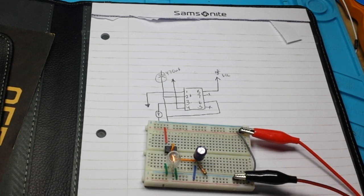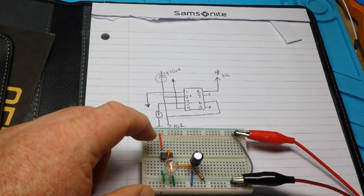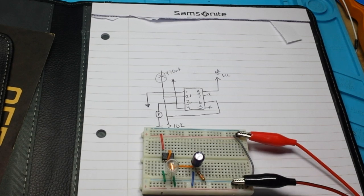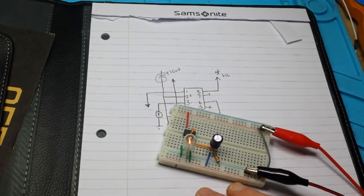Anyway, thanks for watching guys. I hope this helped. One thing to keep in mind, whatever your load is, make sure it doesn't exceed the load capacity of the 555 timer. Right now we're pulling 150 milliamps. 555 is not even hot. So good to go.